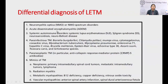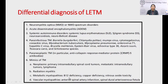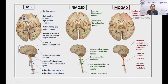Apart from NMOSD, ADEM and other autoimmune and para-infectious causes can also present as LETM, as can paraneoplastic. We must also rule out mimics of LETM that are non-inflammatory — such as intrinsic cord lesions, radiation myelitis, vitamin B12 deficiency, nitrous oxide toxicity, and spinal dural AV fistula, where venous hypertension causes cord edema mimicking LETM.